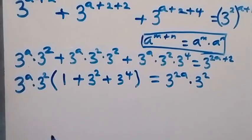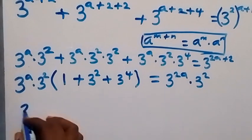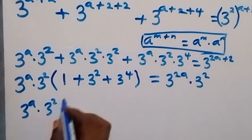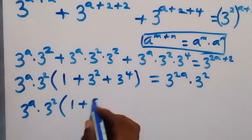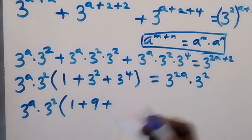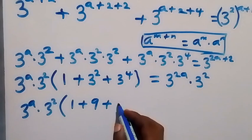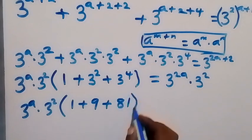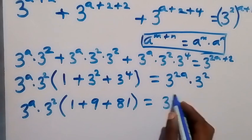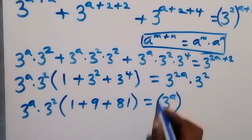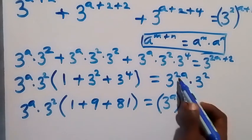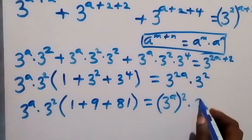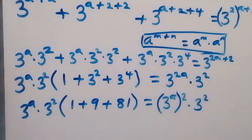We can also rewrite this, and this will become 3 raised to power a times 3 raised to power 2 into bracket: here is 1, then plus 3 squared — 3 times 3 — that's 9, plus 3 raised to power 4 — 3 multiplied by itself four times — that's simply 81. Then equals to, from here we can write this as 3 raised to power a, raised to power 2, raised to power 2 — from the law of indices since this power multiplies — times 3 raised to power 2.